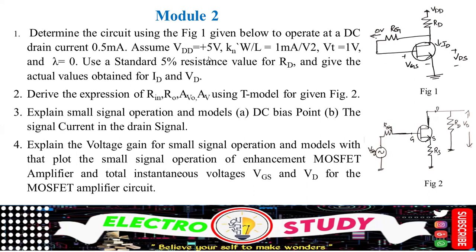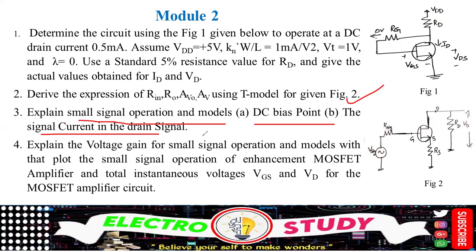Mathematical analysis is required. Wherever mathematical formulas are used, you have to highlight them properly and clearly define the variables, because from textbook to textbook the variables may differ, so you must define them properly. Then explain the small signal operation and models of the DC bias point and the signal current in the drain, using the load characteristics of the MOSFET.